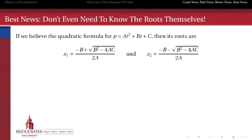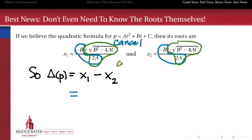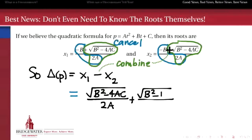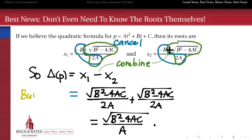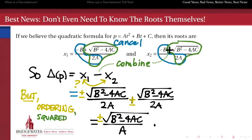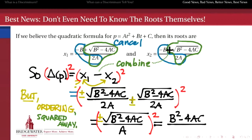Here's the proof of that formula. If we believe the quadratic formula is true, then we know exactly what the two roots of this quadratic are going to be. All we have to do to find the discriminant is subtract the second from the first. Notice that they have minus b over 2a in common, which goes away when we subtract, and the other pieces are equal and opposite, so they combine. When I subtract, I end up getting twice the radical of b squared minus 4ac, over 2a, which gives us the radical of b squared minus 4ac over a. Because the ordering matters — which is x1 and which is x2 — that introduces a plus or minus, which we resolve by squaring, giving us the discriminant squared equal to b squared minus 4ac, all divided by a squared.